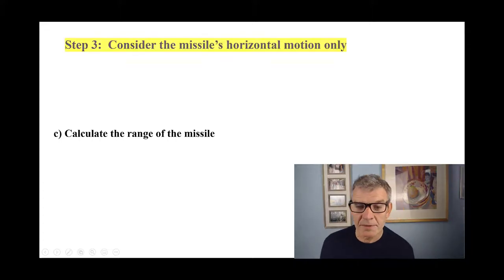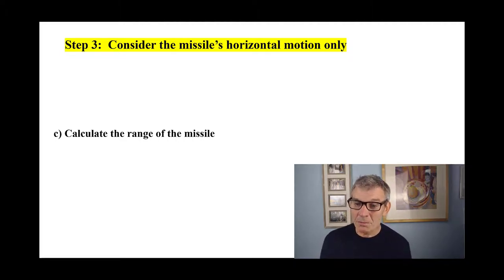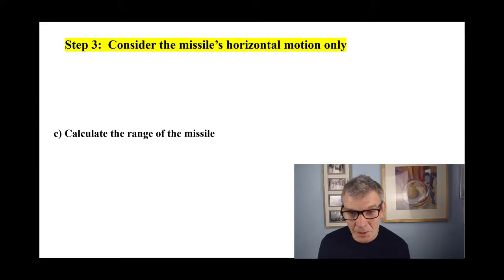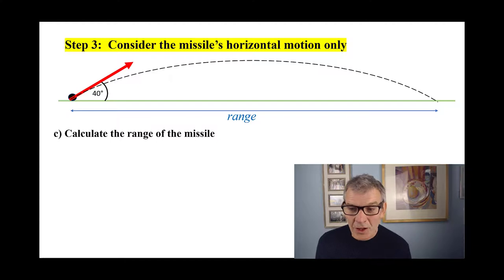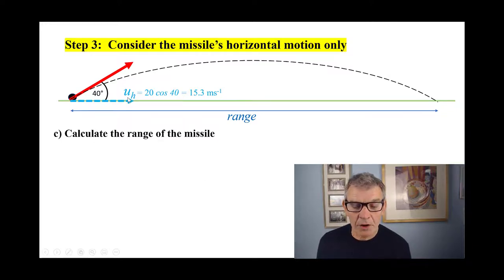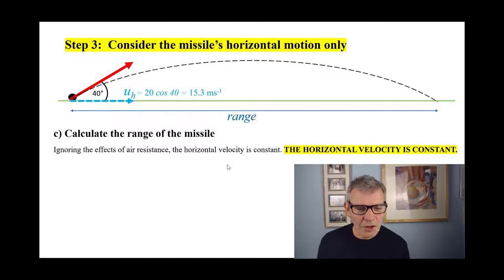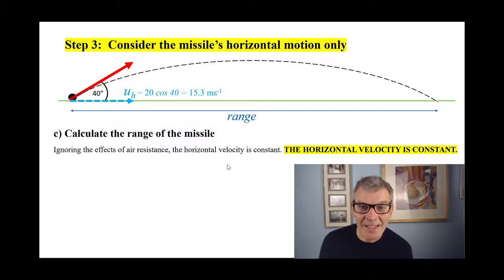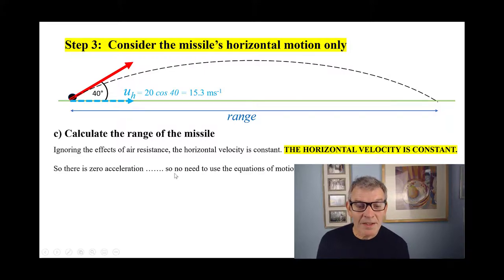Part C: calculate the range of the missile. This is step three — we now consider the missile's horizontal motion. The horizontal motion is completely independent of the vertical motion. The range is the horizontal distance, and our horizontal initial velocity is 20 × cos(40°) = 15.3 m/s. Ignoring the effects of air resistance, the horizontal velocity is constant — which means there is no acceleration, so there is no need to use the equations of motion.